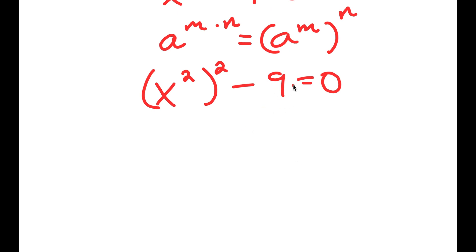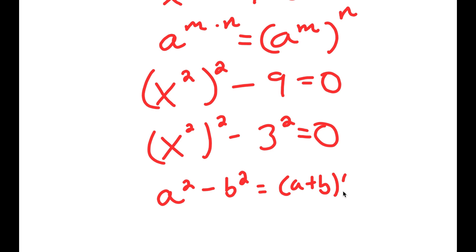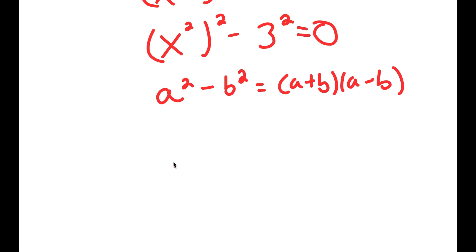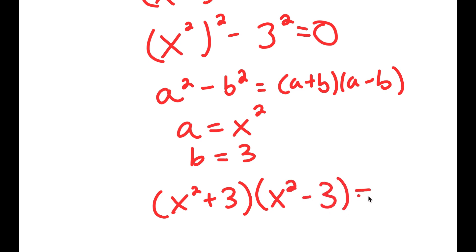Now I'll write negative 9 as negative 3 squared. Using the difference of squares identity, a squared minus b squared equals a plus b times a minus b, where a equals x squared and b equals 3. This gives x squared plus 3 times x squared minus 3 equals 0.